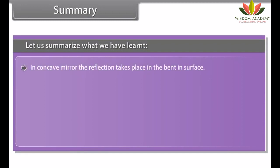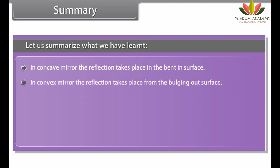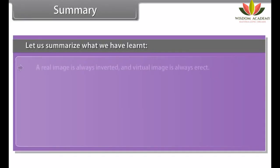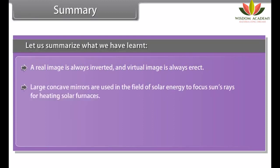Did you know: light exerts physical pressure on objects in its path. Light pressure equals the power of the light beam divided by c (the speed of light). It is written in the Rig Veda that light consists of three primary colors, and mixing them produces all objects of sight. In summary: in a concave mirror, reflection takes place at the bent-in surface; in a convex mirror, reflection takes place from the bulging-out surface. The radius of curvature of a spherical mirror is the radius of the hollow sphere of glass.